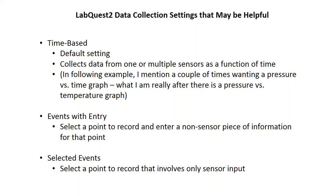In the time-based measurement, that's the one where you get a value with a sensor plugged in and record something as a function of time. You can have two or three sensors plugged in and record that as a function of time. It is the default setting when these things come up — that's what you'll see first. I did a little audio thing and messed up: a couple of times I said I was trying to show you how to make a pressure-time graph, but I was really trying to show you a pressure-temperature graph, which I did. So if you're confused, that's my fault.